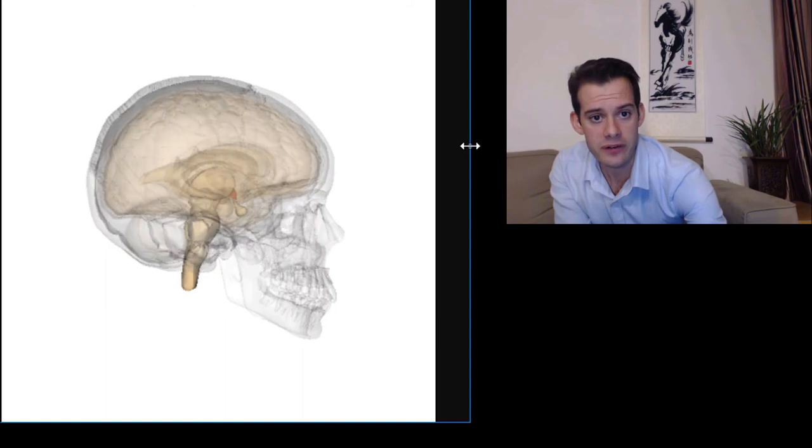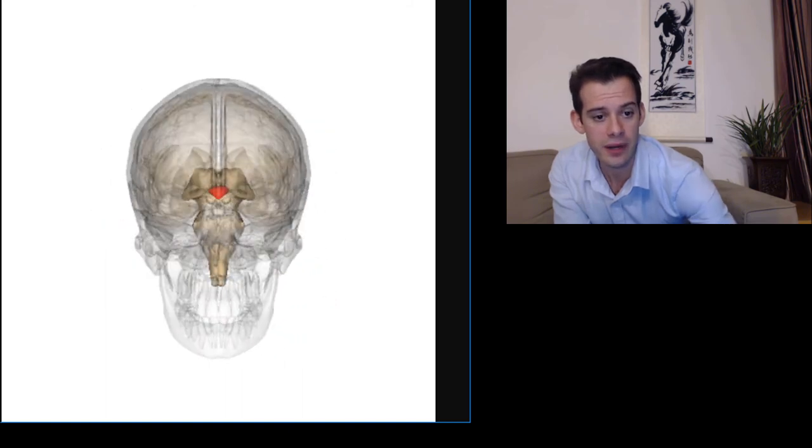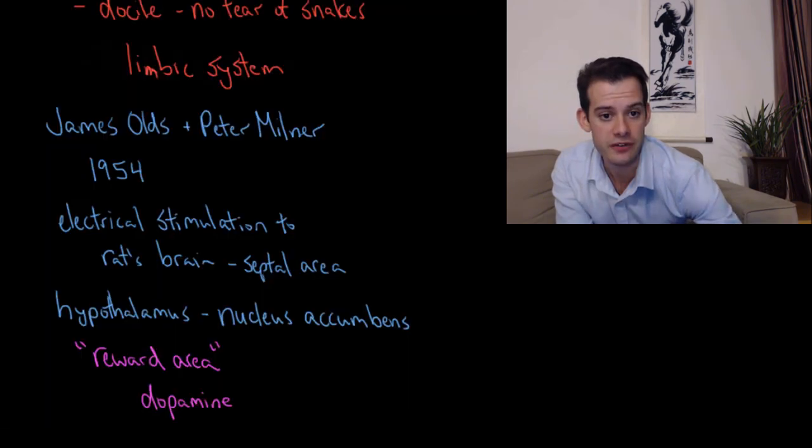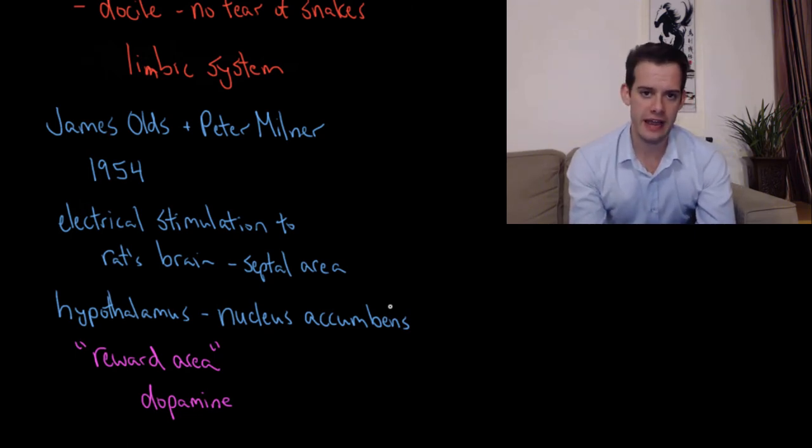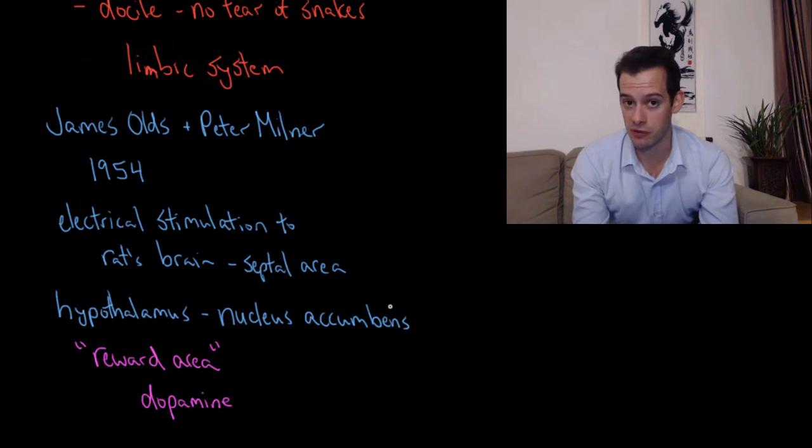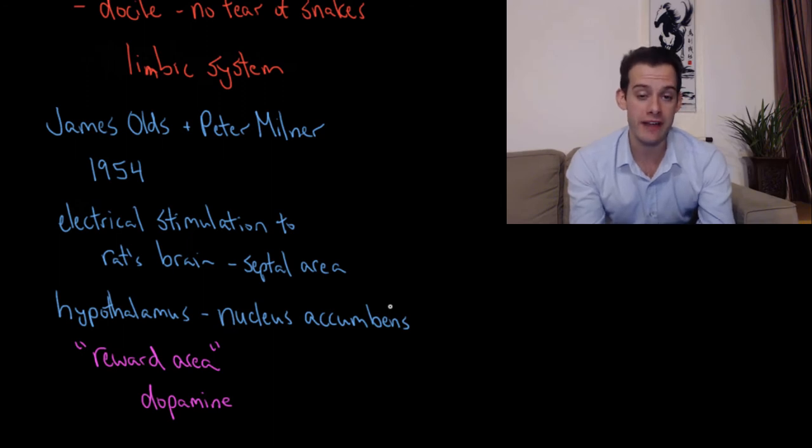Now it's important to note that when this area was first described it was referred to as the pleasure area of the brain. But that's not quite right because it's not really the case that it's just pleasurable for the rat to receive stimulation to this nucleus accumbens area, but rather that the rat is motivated to continue to seek out this stimulation. So this area is now referred to as the reward area of the brain because it's about rewarding and it's about motivation to pursue the behavior again in the future.